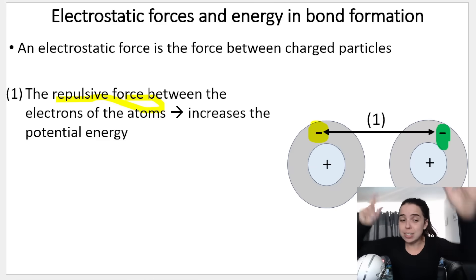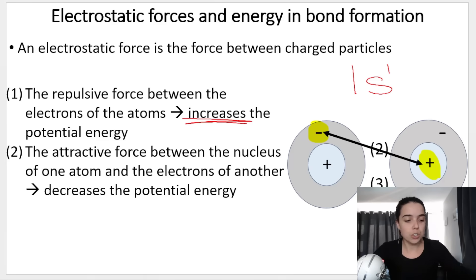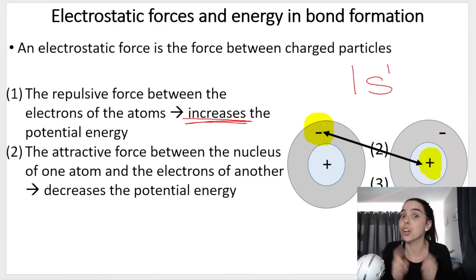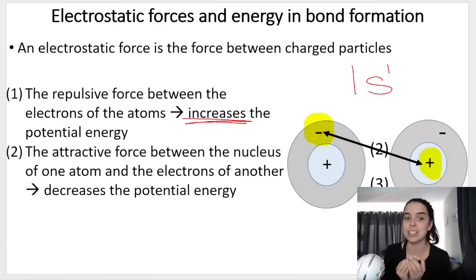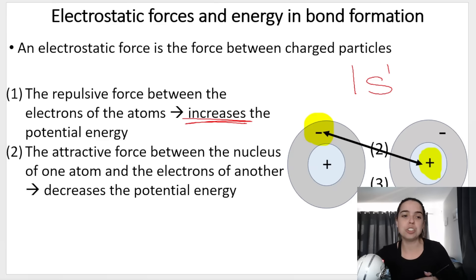High potential energy means unstable. When we lower the potential energy, we have something that is more stable. What number one is saying is that electrons in one atom and electrons in the other atom repel each other, and that repulsion increases the potential energy. Then number two is pointing at the electrons of one atom and the protons in the other atom. Opposites attract - negative electrons, positive protons. Attraction forces decrease the potential energy, which causes something more stable.